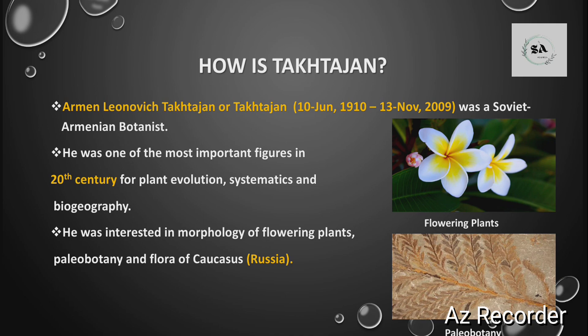Firstly, who is Takhtajan? Armen Leonovich Takhtajan was a Soviet-Armenian botanist. He was an important figure of the 20th century in the fields of plant evolution, systematics, and biogeography. Takhtajan was interested in the morphology of flowering plants, paleobotany, and the flora of the Caucasus. Morphology of flowering plants refers to their physical appearance — size, shape, etc. Paleobotany involves the study of prehistoric plants with the help of fossils.